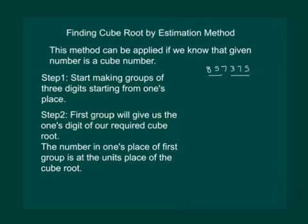Step 2 says that 1st group will give us the 1's digit of our required cube root. We know that 375 is the 1st group. But how it will be useful? Let us see. It says that the number in 1's place of the 1st group is at the 1's place of the cube root.